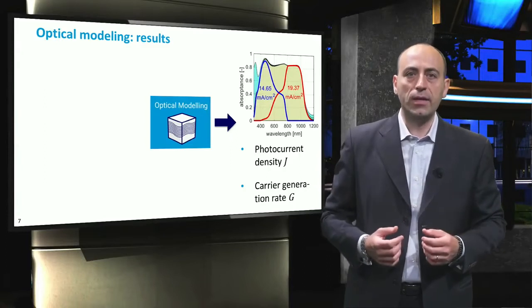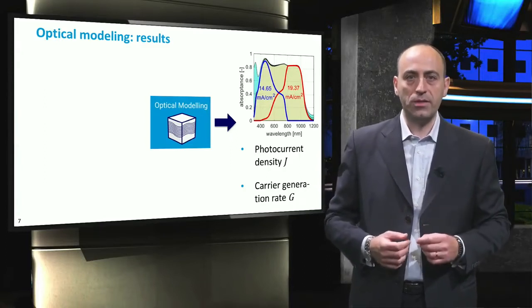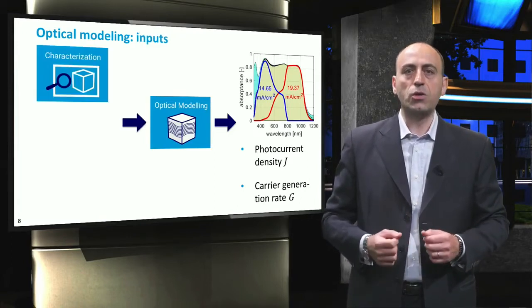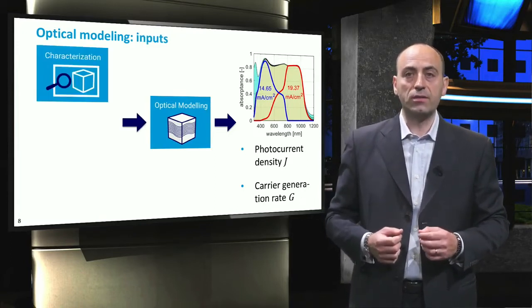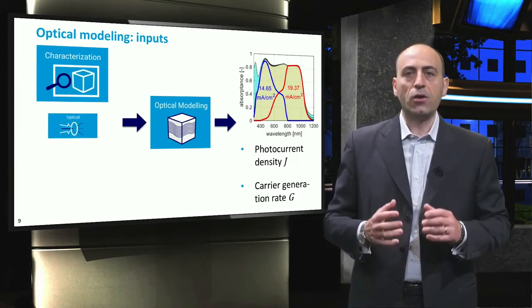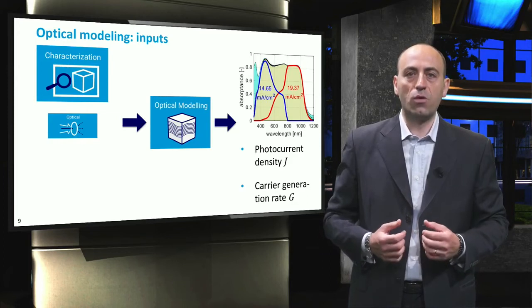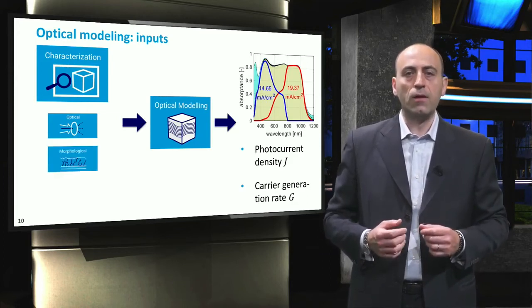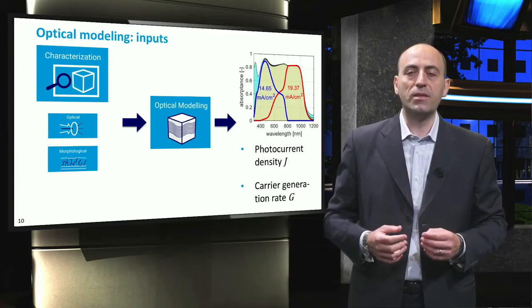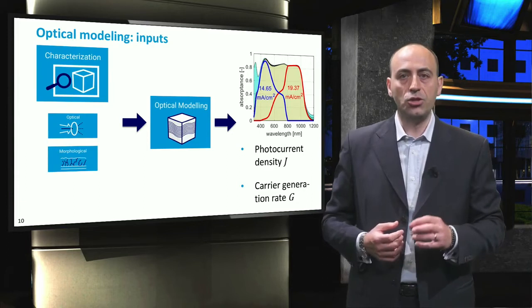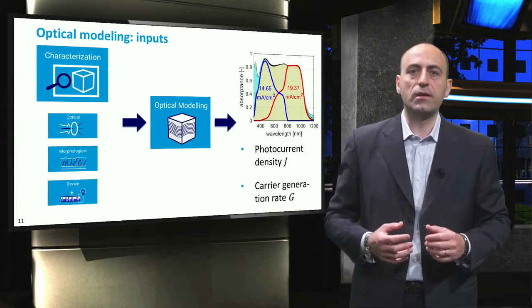An accurate optical modeling depends on the correct properties determined during the characterization. In particular, the use of correctly measured refractive index values is fundamental for every layer of the solar cell. In addition, a correct characterization of the device morphology is crucial to build up an accurate solar cell model. Finally, the measured device performance can be used to calibrate the chosen simulation platform and ensure that the obtained results can be trusted.